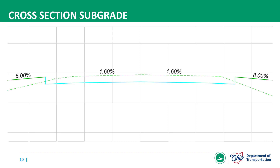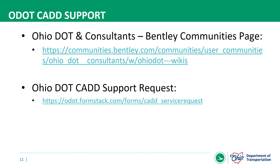When you're done, you'll end up with a cross section that should look like this. The next question that folks will ask is how to remove the annotation for the pavement slopes, and we'll cover that another day. But for now, this is how you show or create your subgrade in your templates so that you can show a nice clean cross section. And here are just a couple of links for support from our office — you can look at our Bentley Communities page and a link to our CAD support request form.